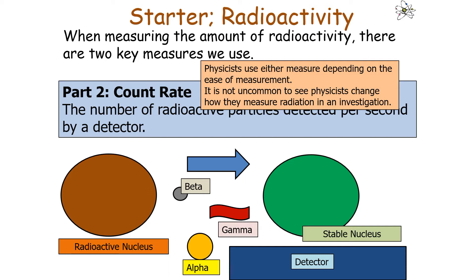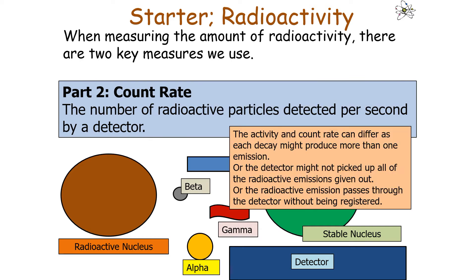Physicists use either measure depending on ease of measurement, and it is not uncommon to change how they measure radiation in an investigation. However, activity and count rate are not always the same value — because each decay might produce more than one emission, the detector might not pick up all radioactive emissions, or an emission could pass through the detector without being registered.